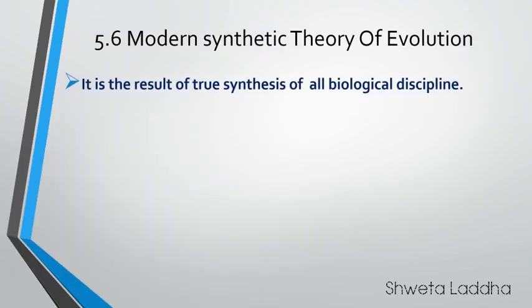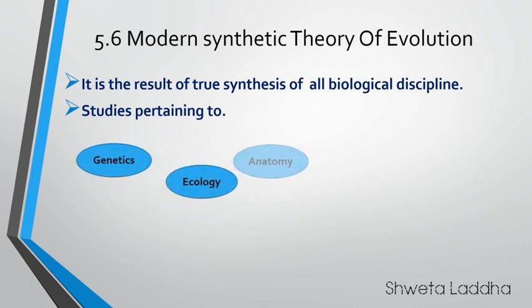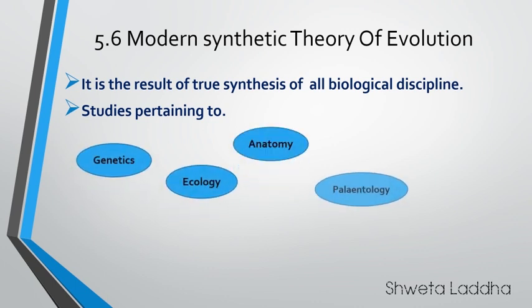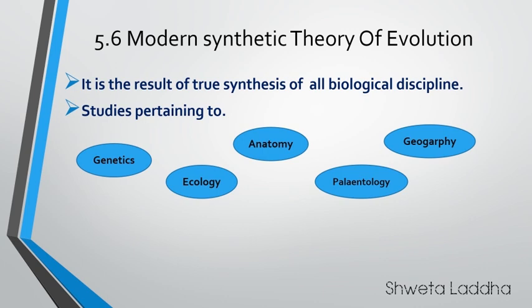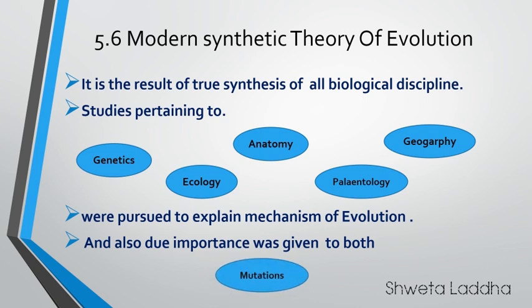So what is modern synthetic theory of evolution? It is a result of true synthesis of many biological disciplines. Studies were done pertaining to genetics, ecology, anatomy, paleontology, geography, and all these studies were pursued and finally the mechanism of evolution was explained. It also gave importance to mutations and natural selection.